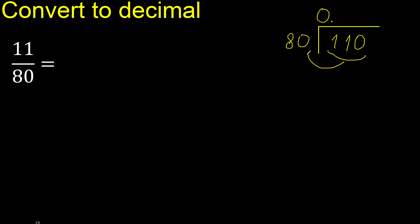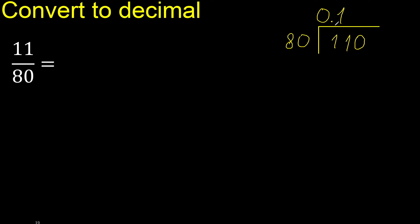110 is not less, therefore 80 multiplied by which number is nearest to 110 but not greater — multiplied by 2 is greater, therefore multiplied by 1 is 80.